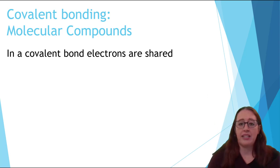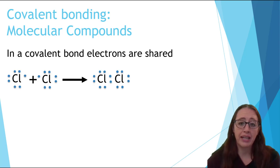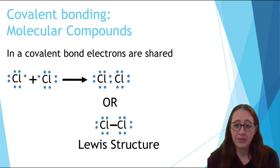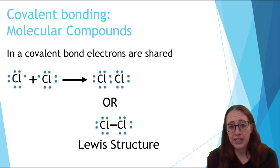In covalent bonding, the molecule will be sharing electron density to make up the octet. We represent these by using Lewis structures, as shown here. Typically, instead of representing the bonds with these shared dots, we're going to draw a line. Each line represents two electrons.